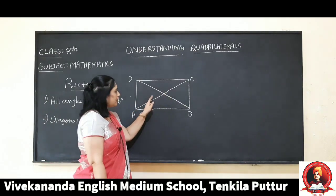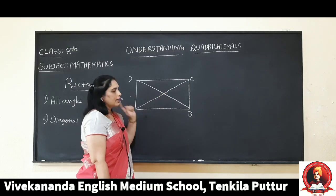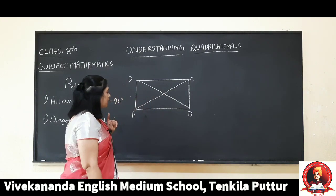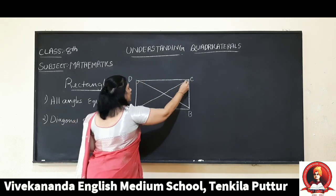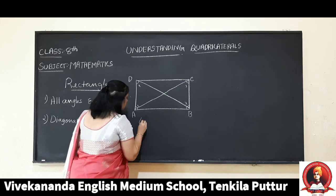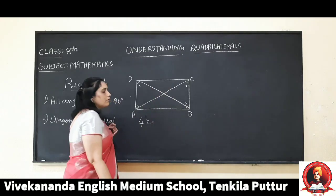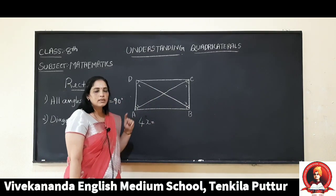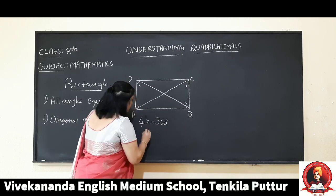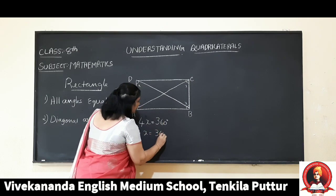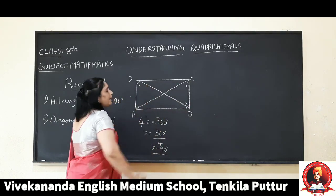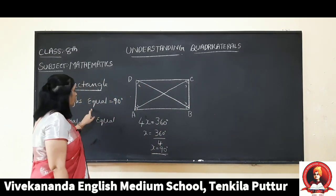The sum of interior angles of a quadrilateral is equal to 360 degrees, as we studied in the previous class. So 4x equals 360, therefore x equals 360 divided by 4, which gives x equal to 90 degrees. So all 4 angles in a rectangle are 90 degrees. This is one main property of a rectangle.